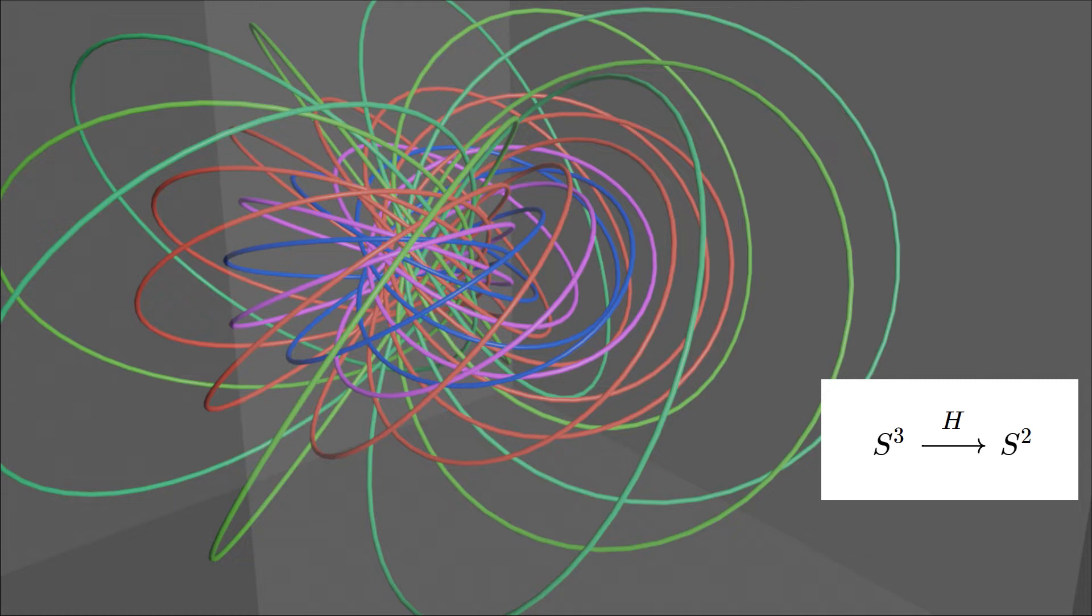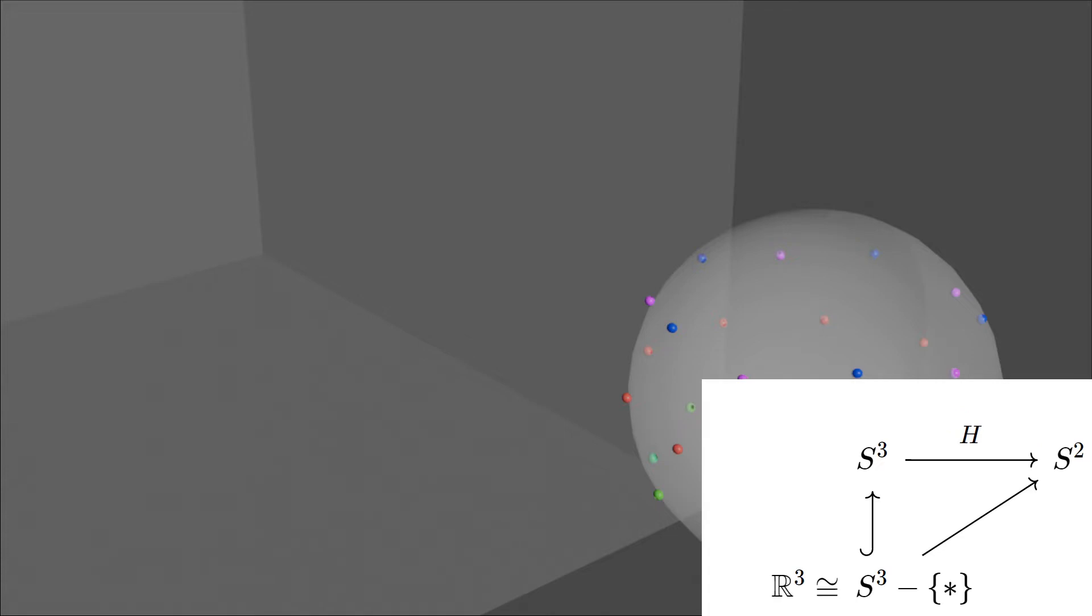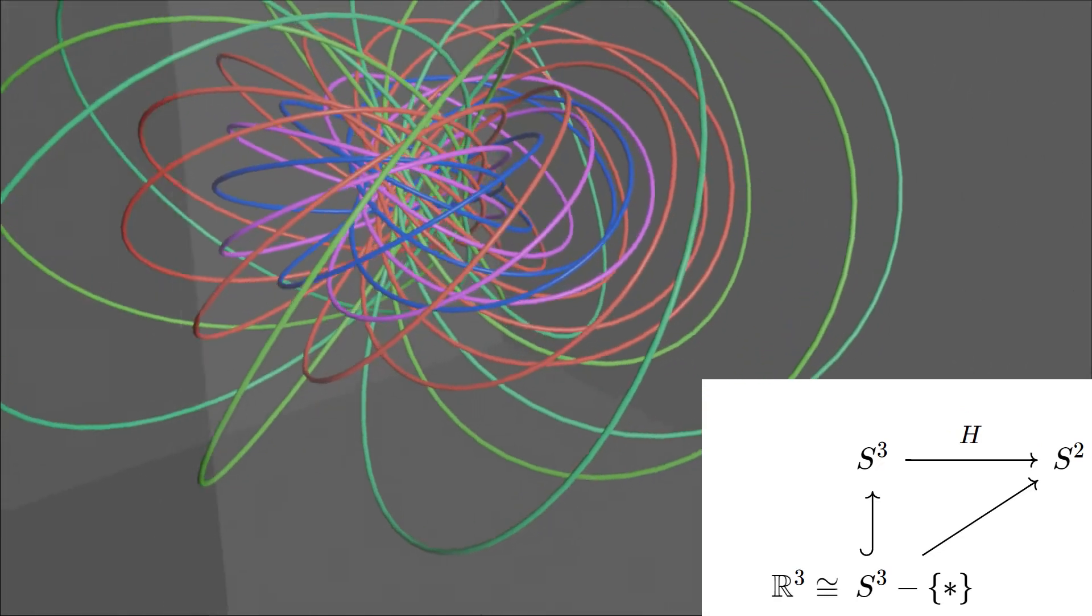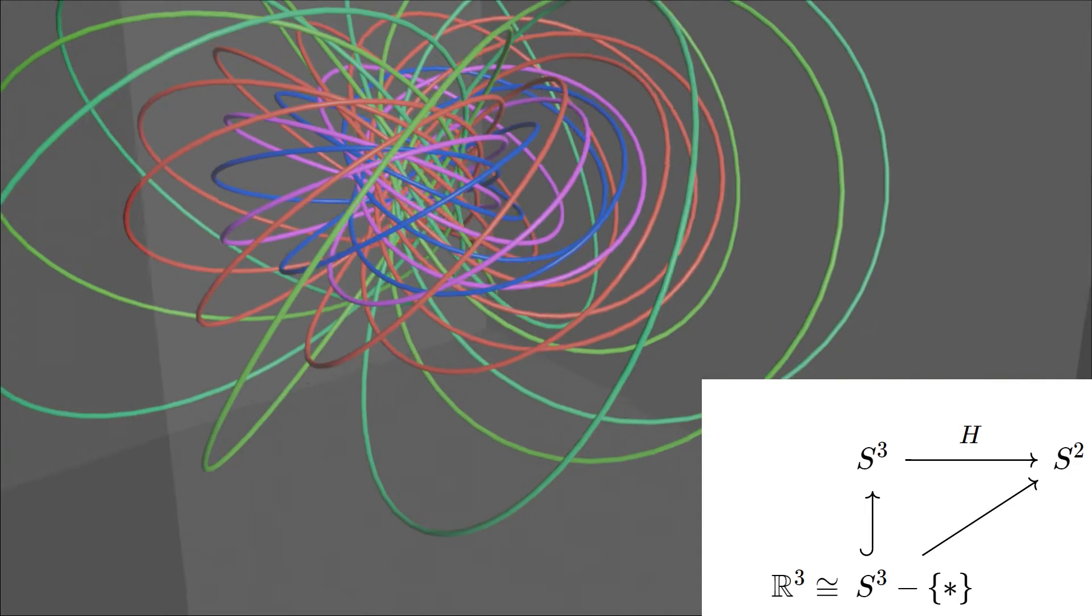Now we just need to know it's a non-trivial map from the three-dimensional sphere surface S³ to the two-dimensional sphere S². And since S³ is hard to draw, we remove a polar point of it and project the remaining parts to the three-dimensional space R³.